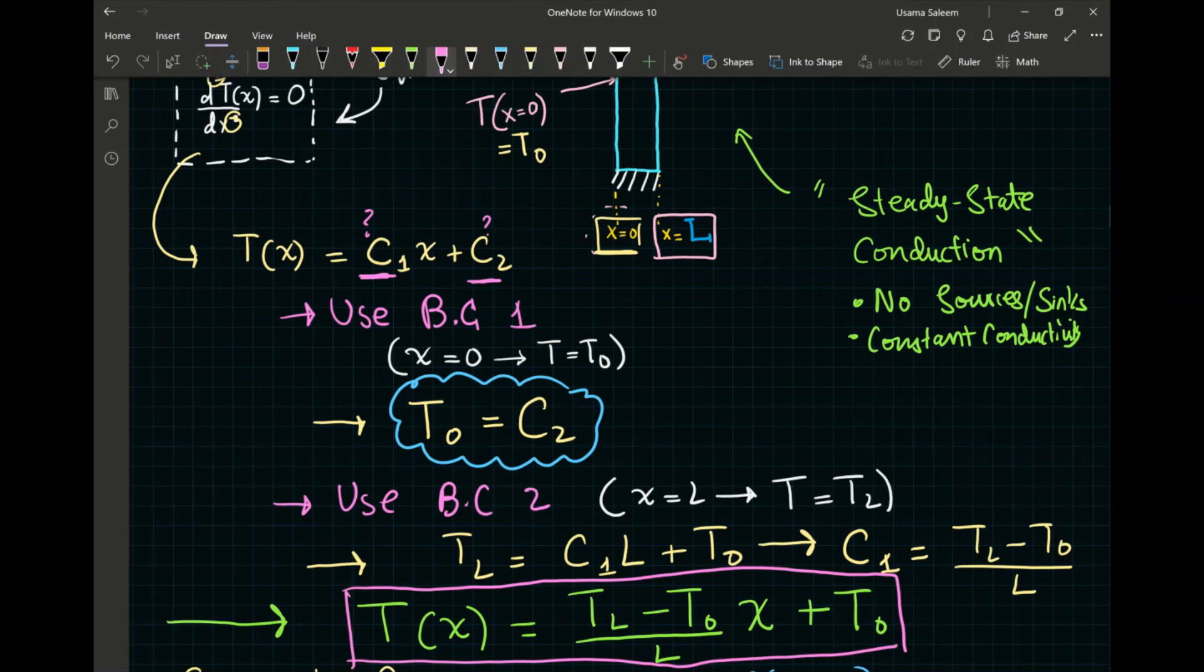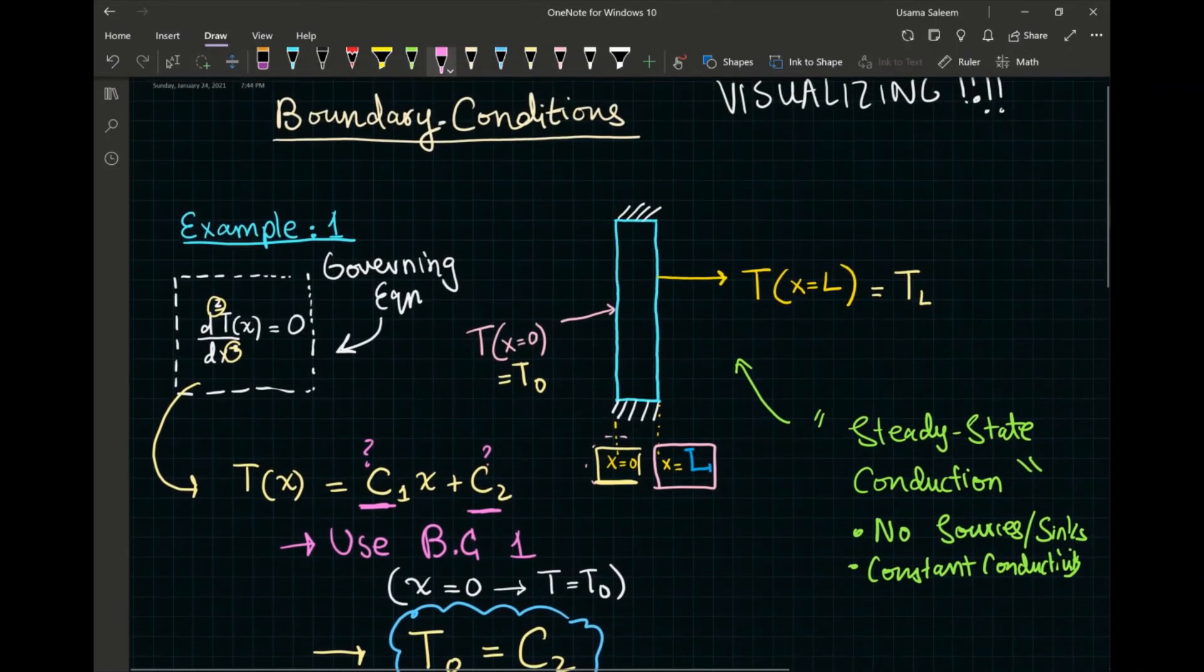Now, we're going to go over some more examples, and we're going to talk about the different kinds of boundary conditions and boundary conditions in different coordinate systems. So in this video, we covered a simple Cartesian coordinates problem. And in the next videos, we're going to go over hopefully cylindrical and spherical.